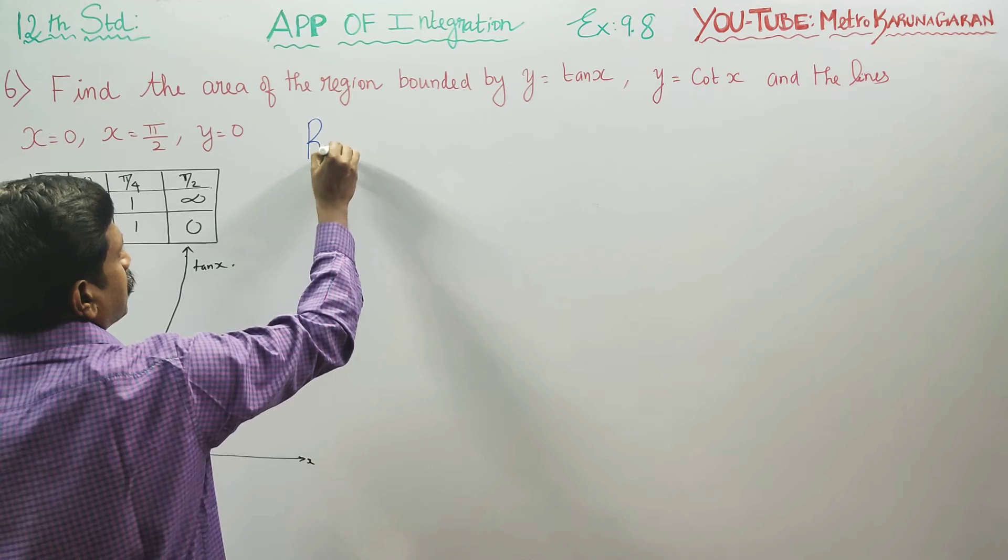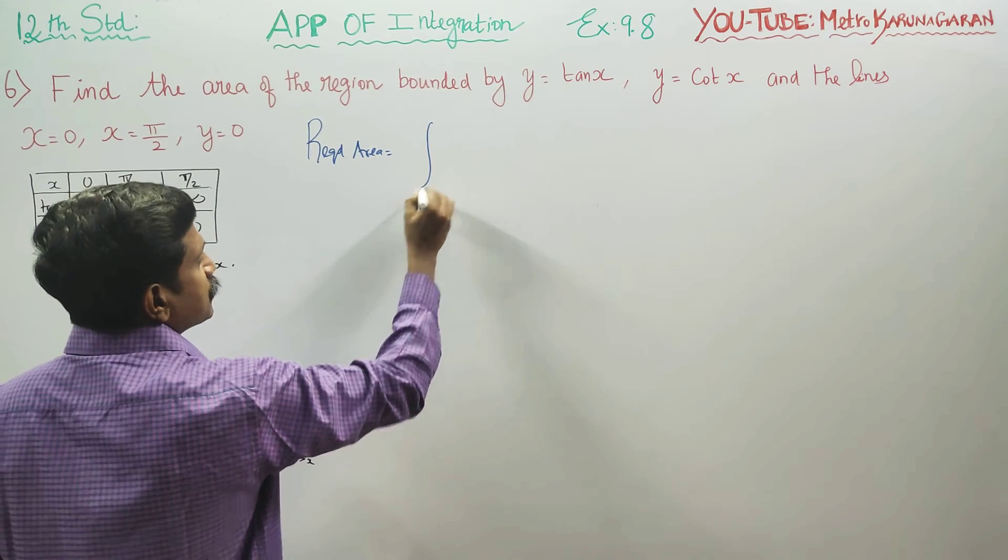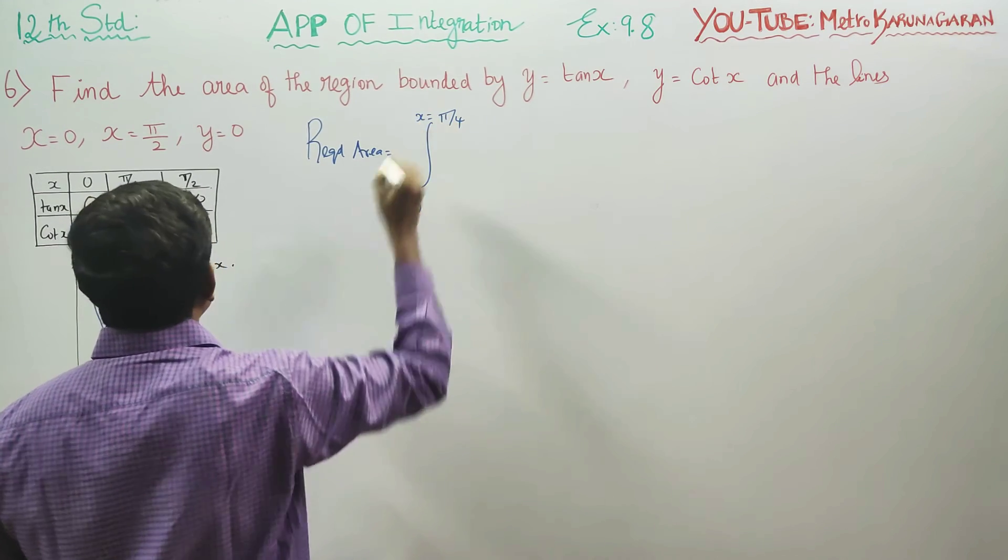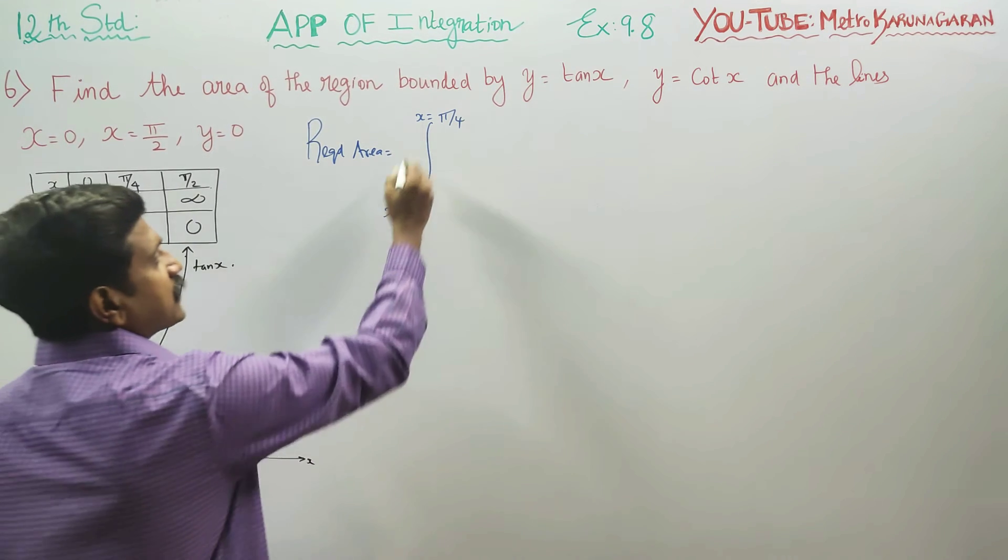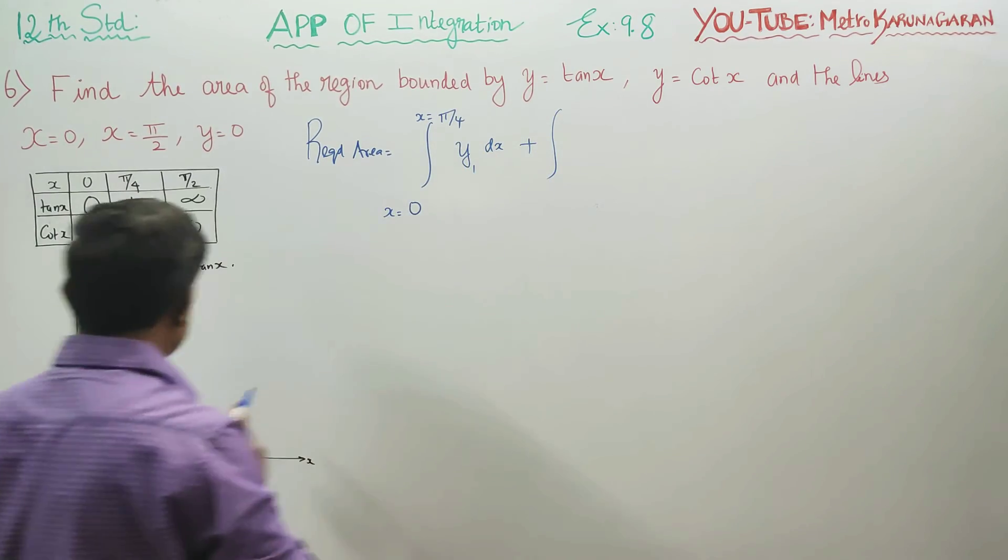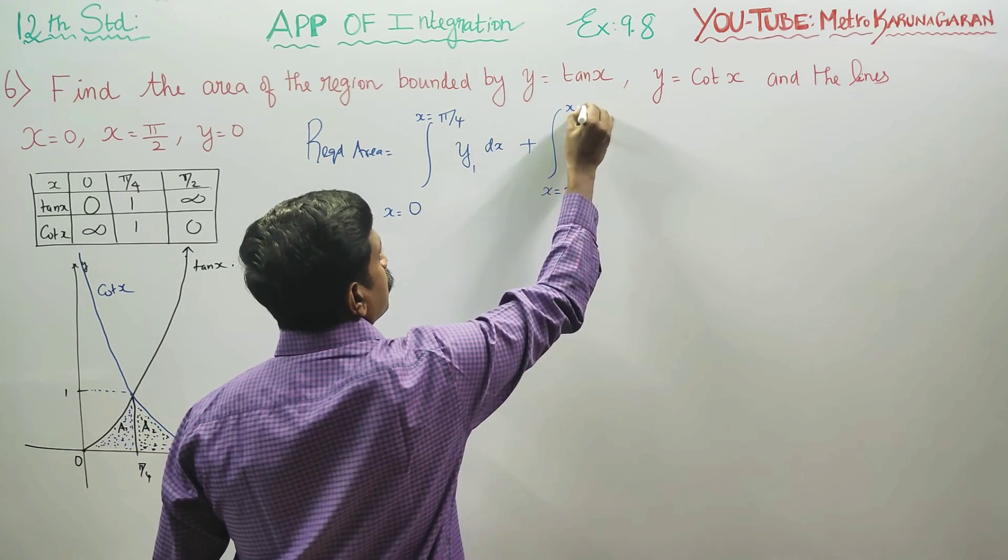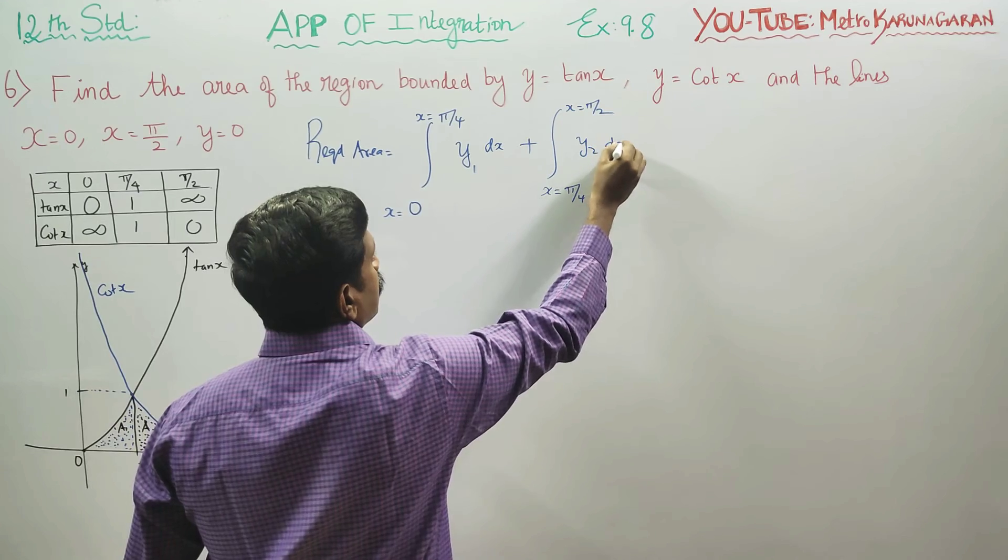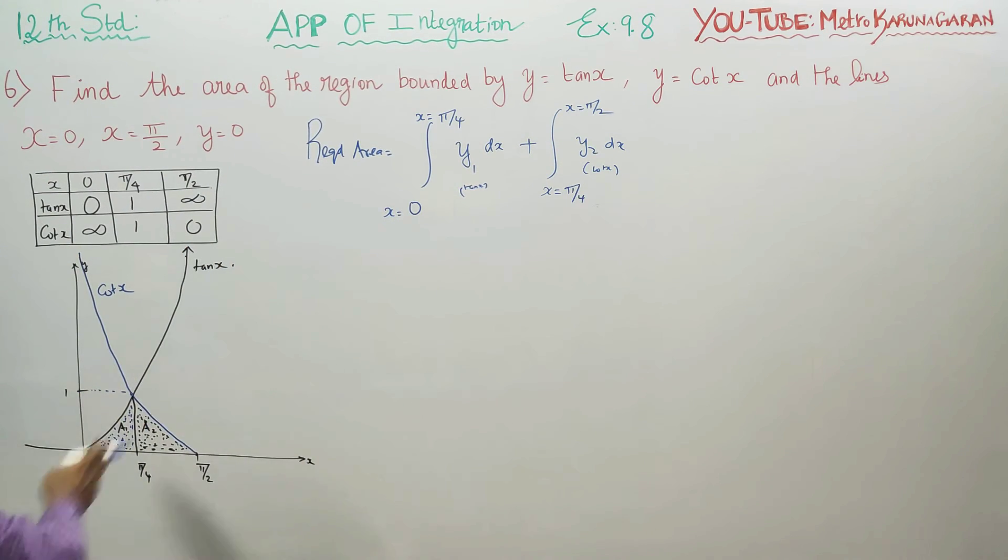A1 and A2, A1 is under tan x curve and A2 is under cot x curve. Therefore my required area will be integration 0 to pi by 4, x equals 0 to pi by 4, tan x curve dx, plus A2, pi by 4 to pi by 2, y2 dx. Y2 is the cot x curve. Now required area is equal to A1 plus A2.